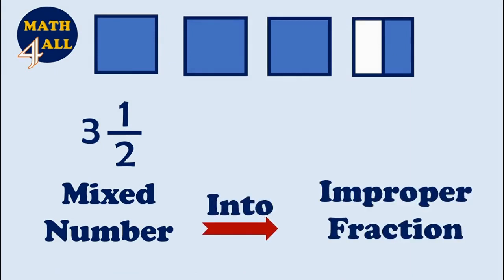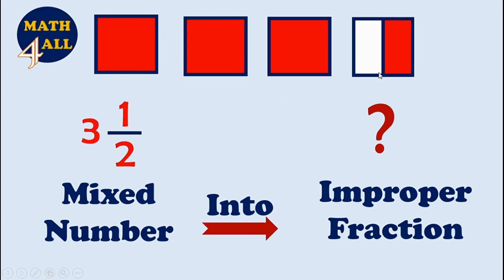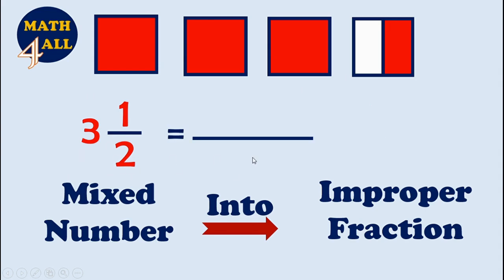Let's practice more. What should we do to convert this mixed number into an improper fraction? Let's look at this model: we have three full colored shapes and one half, so it's three and one-half. Now let's convert this mixed number into an improper fraction. The first step is to write the same denominator — here the denominator is two.